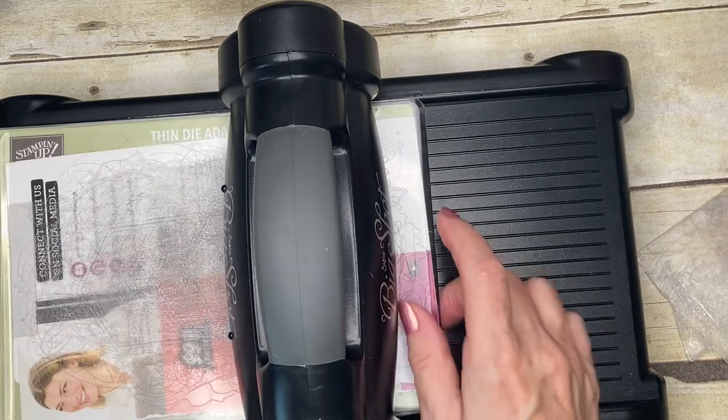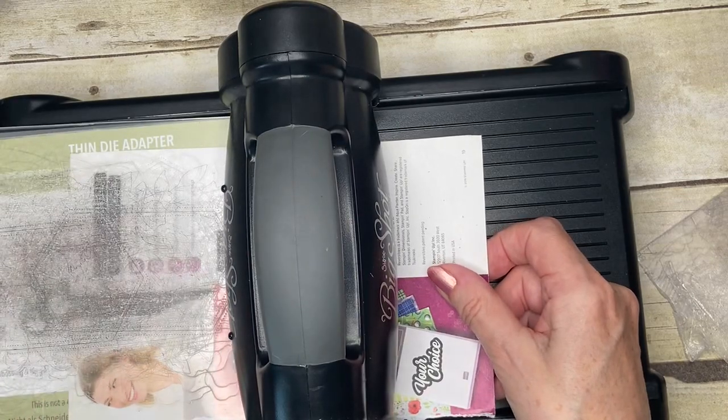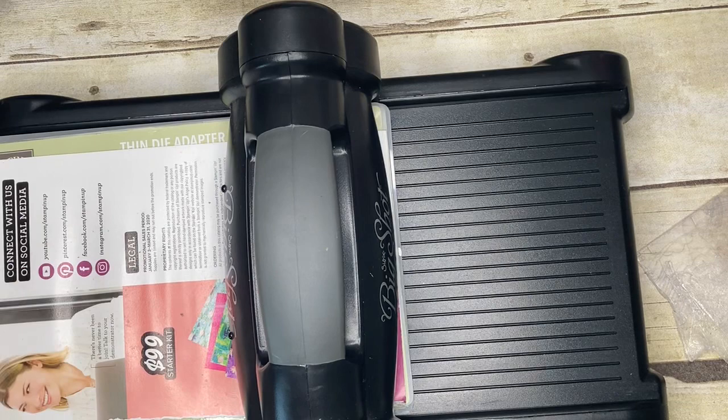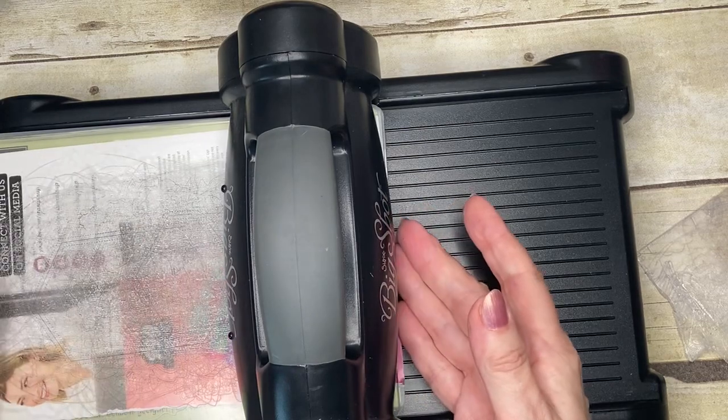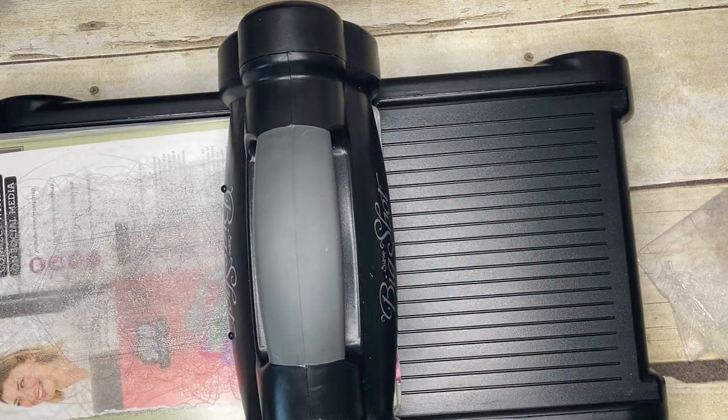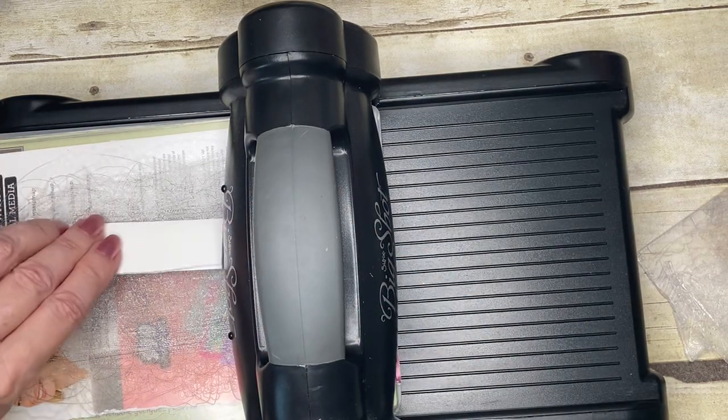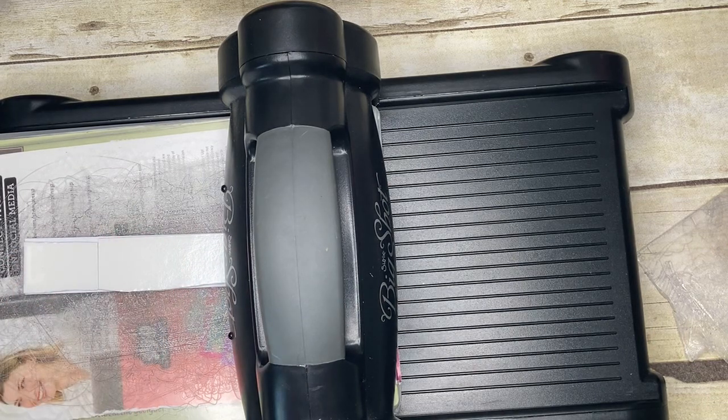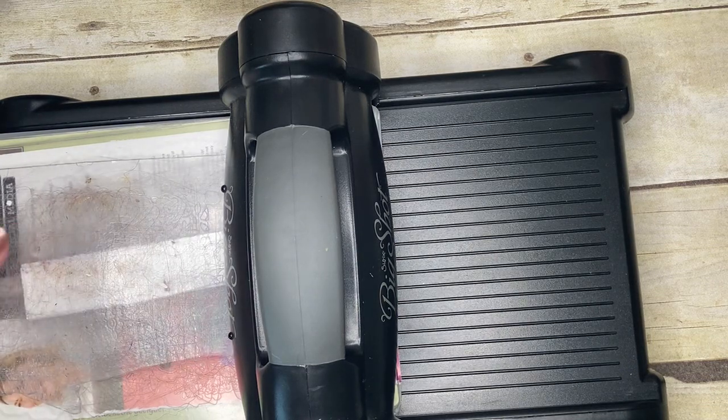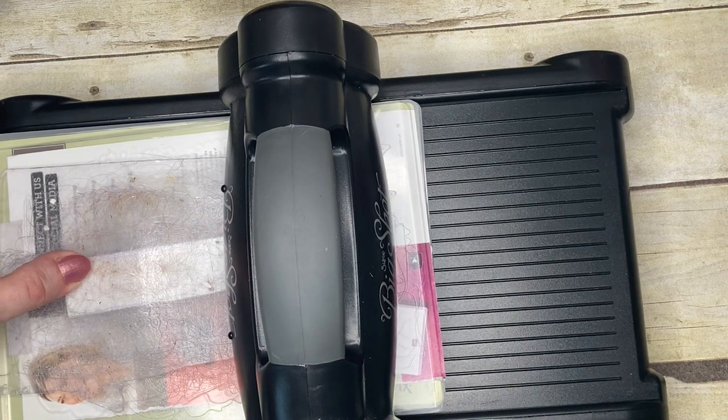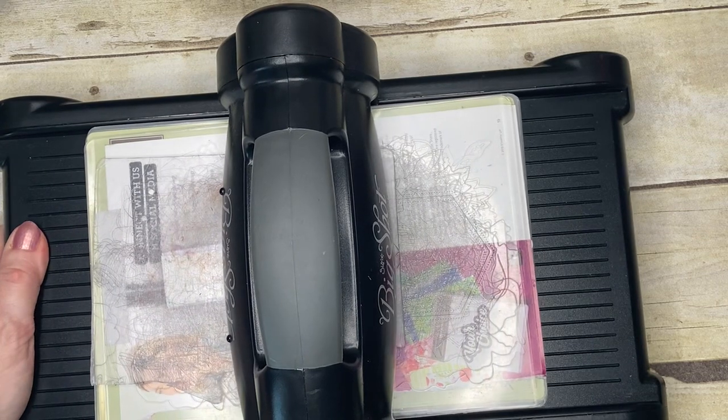So I'm using the base plate and then the thin die adapter. And then I've got one clear cutting plate. Now with this particular Big Shot, I know I need to have a little shim in there. Every Big Shot is different, but that's what I know on mine. And now I'm going to flip this over so that it's face down. And that means that the cutting edges of the dies are facing upwards. And then I've got my piece of my second plate on top. It snapped a while ago, but it still works perfectly. So I'm going to use it.